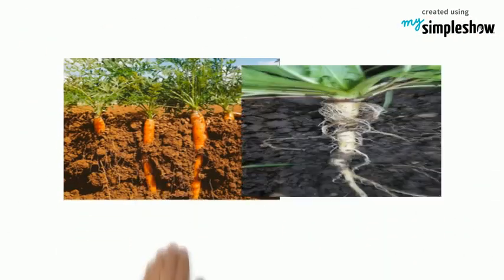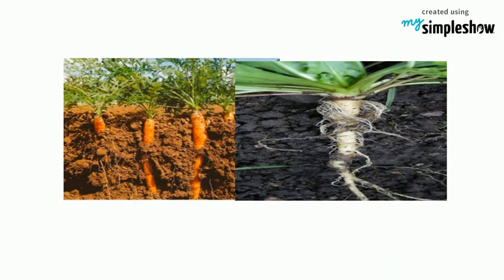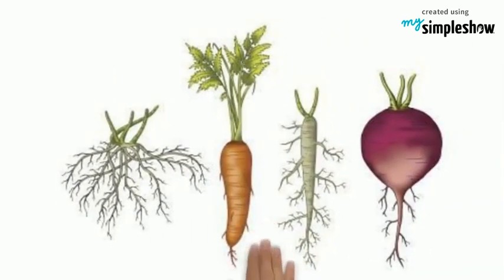In some plants, the taproot also serves as food storage. Examples of the taproot system can be seen in a variety of plants, even the ones we eat, like carrots, turnip, and beets.